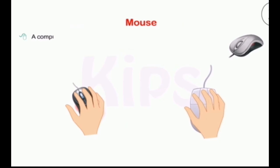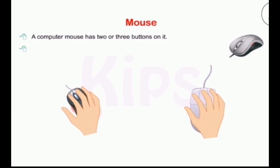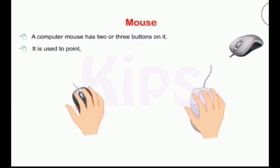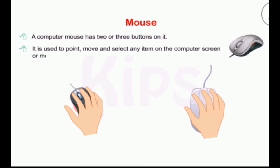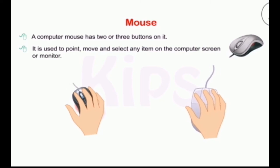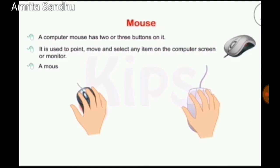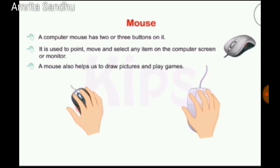This is a computer mouse — an electronic mouse. Look at the picture to see how you hold it. A mouse has two or three buttons. It is used to point, move, and select any item on the computer screen. A mouse is also used to draw pictures and play games.